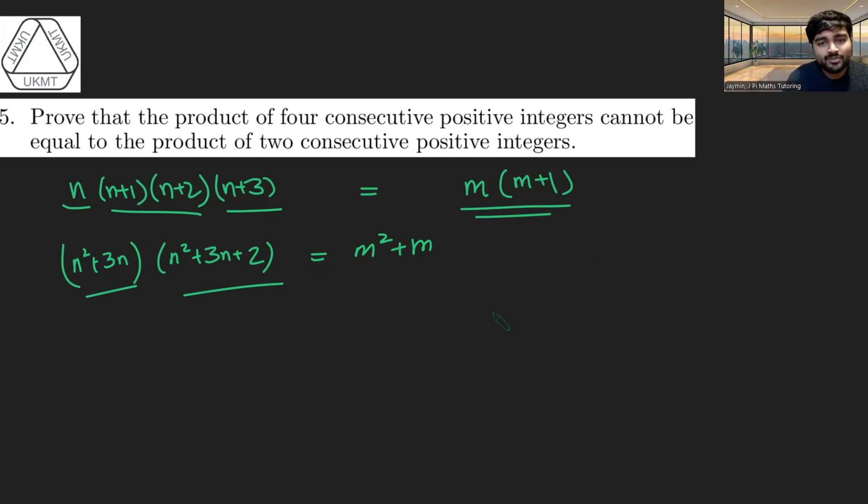What we're going to do is introduce maybe another letter. Let me call it T. And T is going to be n squared plus 3n plus 1. And the reason for that is then we can say that these two numbers, one is one below T, and one is one above T. So this is just T minus 1, T plus 1, or in other words, T squared minus 1.